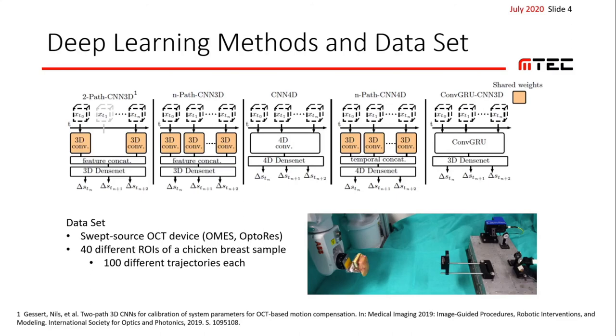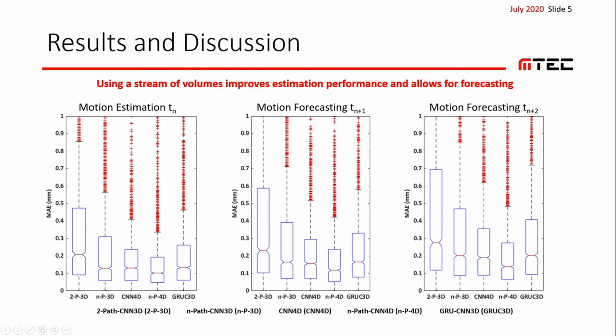Next, let's have a look at the results. Here we see the boxplots for the mean absolute errors for motion estimation as well as motion forecasting of 1 and 2 time steps into the future.